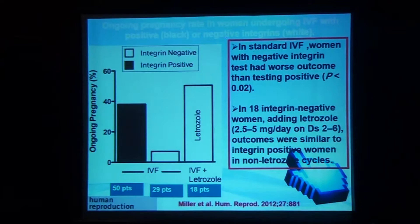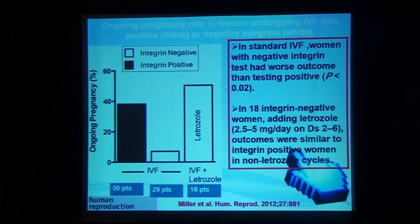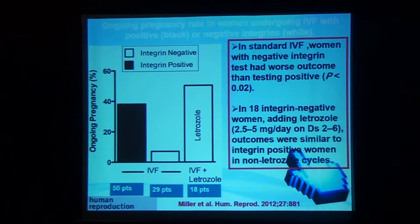In their group, 50 women who had positive expression of alpha-V beta-3 had higher pregnancy rates compared to 29 who had absent integrin expression. However, 18 of these 29 women with absent expression received the standard FEMARA or aromatase inhibitor gonadotropin integrin protocol, and they had good pregnancy outcomes — with the last column showing pregnancy rates almost comparable to those having positive alpha-V beta-3 integrin.